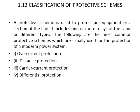The protective scheme is used to protect equipment or a section of line; it includes one or more relays of the same type or different types. The common protective schemes used in modern power systems are: overcurrent protection, distance protection, carrier current protection, and differential protection. Overcurrent protection is used for protection of distribution lines, large motors, and equipment, and it includes one or more overcurrent relays that operate when the current exceeds a preset value.